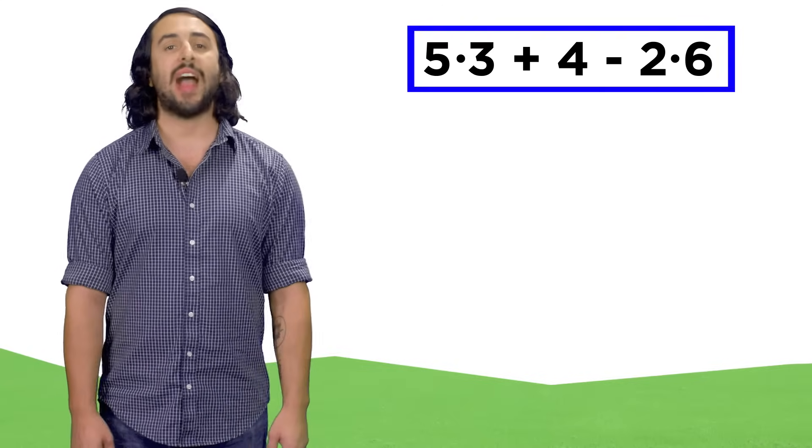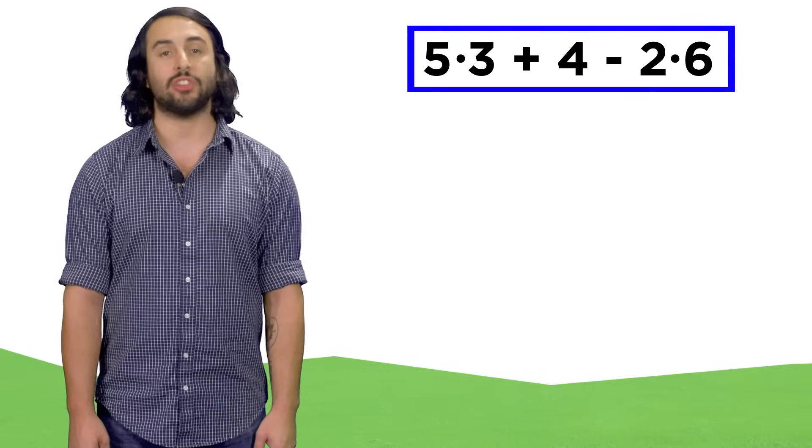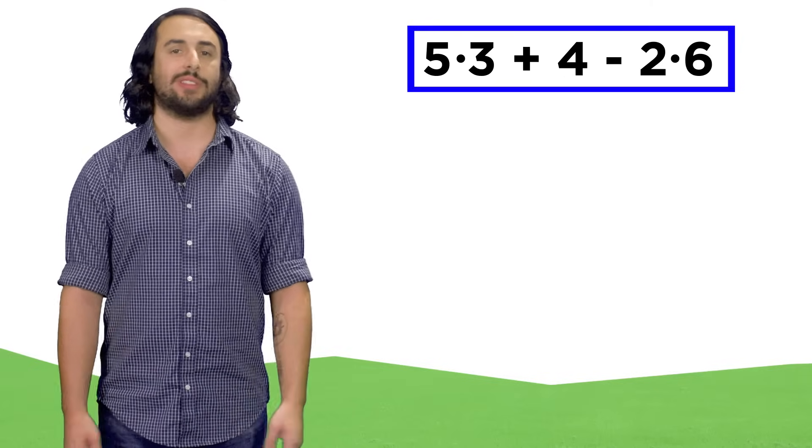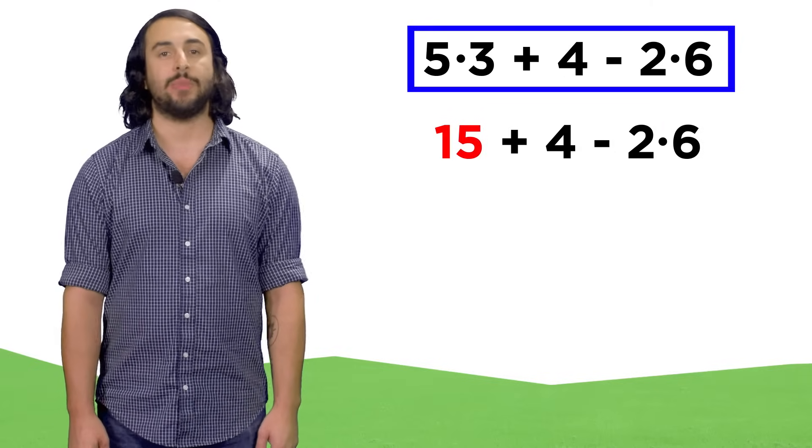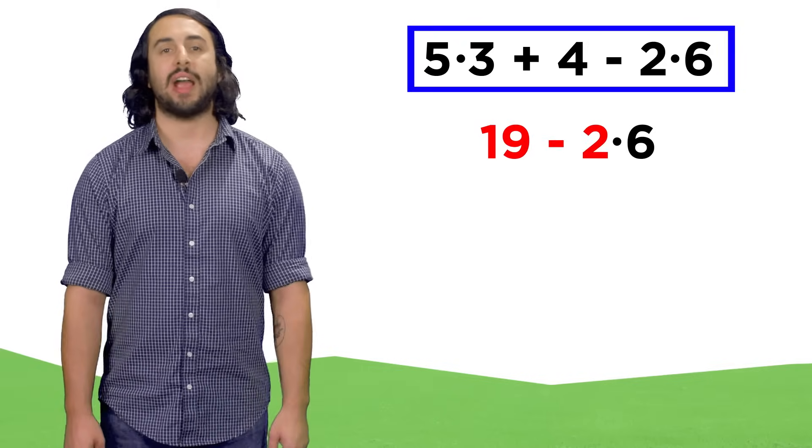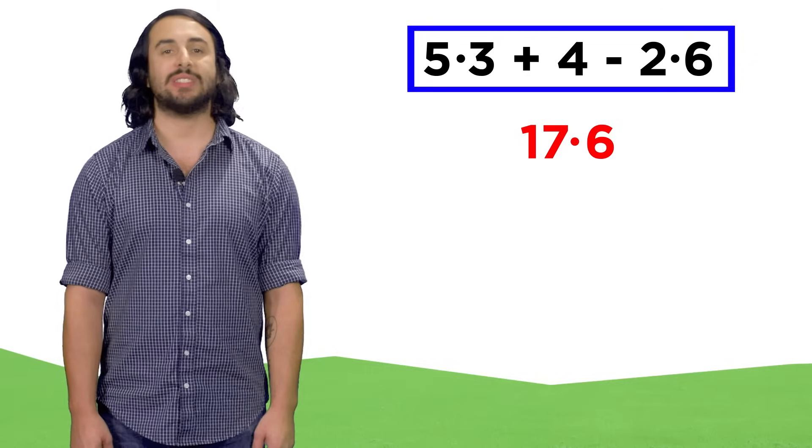How about this, five times three plus four minus two times six. What's the best way to do this? Let's start from the left. Five times three is fifteen, plus four is nineteen, minus two is seventeen, times six is 102.